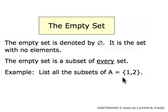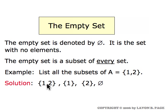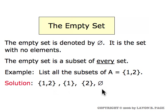Let's list all the subsets of the set capital A whose elements are the numbers one and two. We can take all the elements — in other words the set A itself — that's a subset. We could take just the number one and form the subset consisting of that element alone. We have a subset consisting of the number two alone. Or we have the empty set. So these four sets are all the sets that qualify as subsets of A.